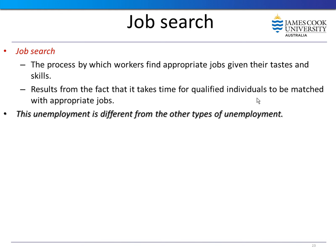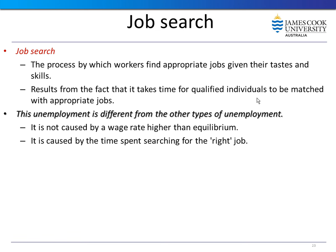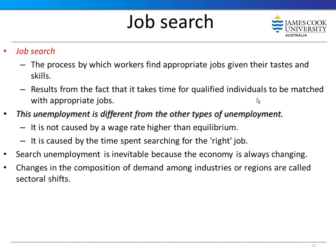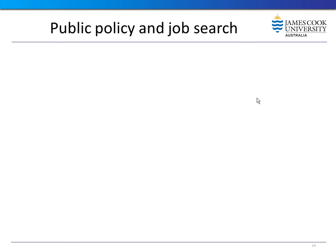To find a job, people need to search — the process by which workers find appropriate jobs given their tastes and skills is called job search. This type of unemployment is different from others; it is not caused by a wage rate above equilibrium, but rather by time spent searching for the right job. It is inevitable because the economy is always changing. Changes in the composition of demand among industries are called sectoral shifts, and it takes time for workers to search for and find jobs in new sectors.